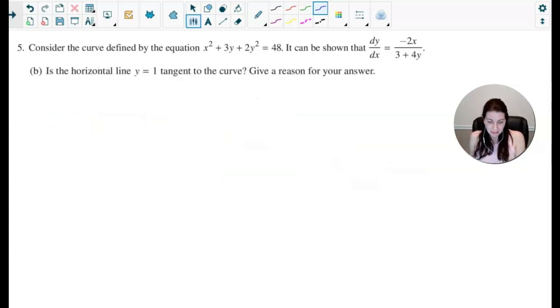All right, on to part B. And part B says, is the horizontal line y equals 1 tangent to the curve, and give a reason for your answer. So the first thing I would do is I would plug in the y-value of 1 and see what the corresponding x-coordinate is at that point. So I would have x squared plus 3 times 1 plus 2 times 1 squared, and that equals 48.